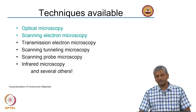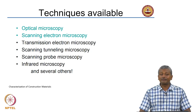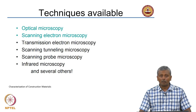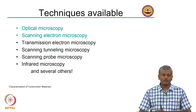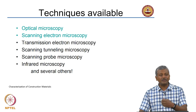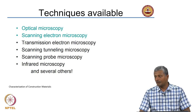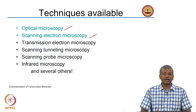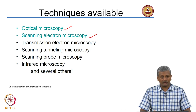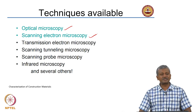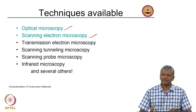There are several different microscopy techniques available: optical microscopy, scanning electron microscopy, transmission electron microscopy, and lesser-known techniques like scanning tunneling microscopy, scanning probe microscopy, and infrared microscopy. I am only touching the tip of the iceberg. In this course, we will concentrate on optical and scanning electron microscopy, as these are most commonly used for construction materials, particularly concrete. We will briefly cover transmission electron microscopy mainly to distinguish it from SEM.